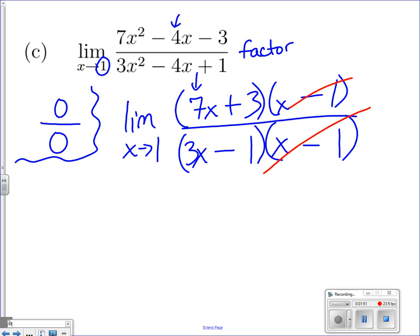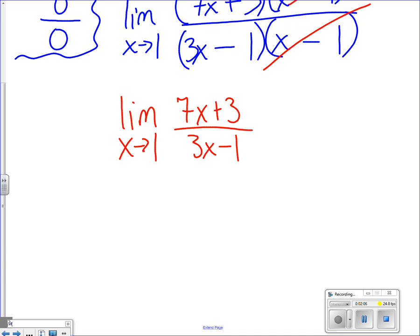Now let's go ahead and see if we can use that direct evaluation. So we have the limit as x approaches 1 of 7x plus 3 on top over this 3x minus 1 on the bottom. Now when we go ahead and plug in that value, 1,